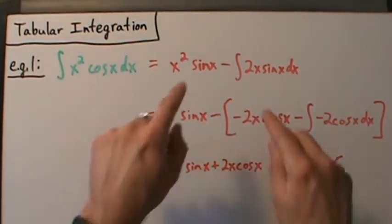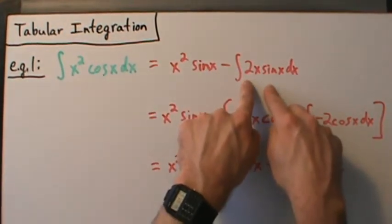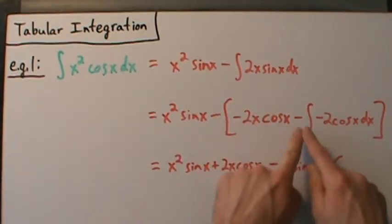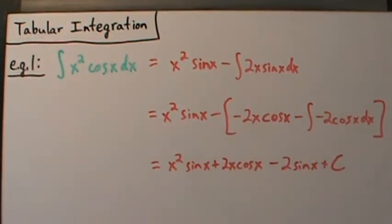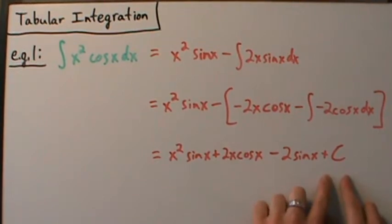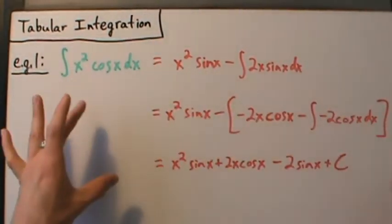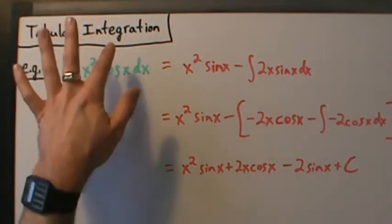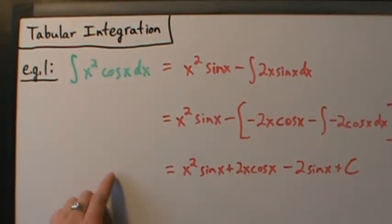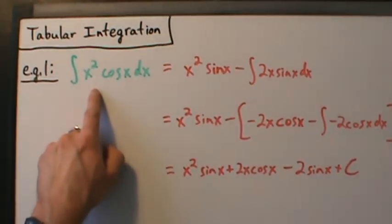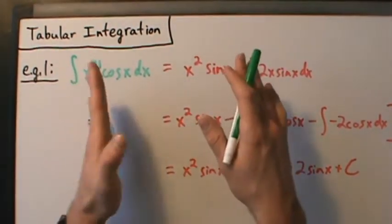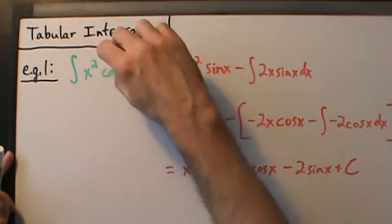When we do the integration by parts formula, we end up with an expression, and then we have the integral of 2x sine of x dx. We have to do integration by parts again. After doing integration by parts on that, we end up with the full expression and simplify. So basically we did integration by parts twice. But what if instead of x squared we had x to the 21st? You'd have to do integration by parts 21 times, which is crazy.